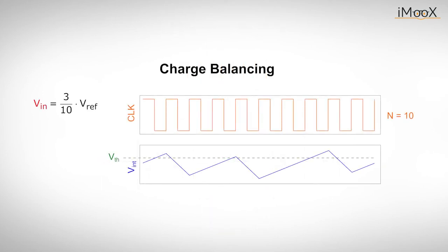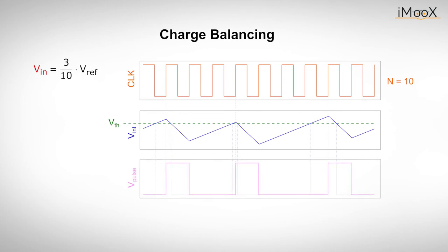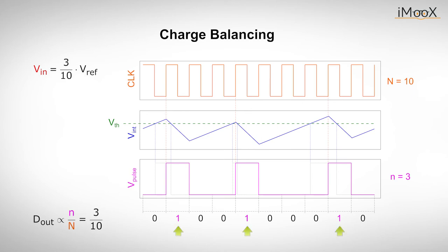In this picture, you can see 10 periods of a clock signal. The input voltage in this example is three tenths of the reference voltage. The input voltage is integrated and compared to a certain threshold voltage. Each time the threshold voltage is exceeded by the integrated signal, a pulse with a duration of one clock cycle is triggered at the output. Simply counting the number of pulses where the output is high and related to the total number of clock cycles gives a result proportional to the input voltage.